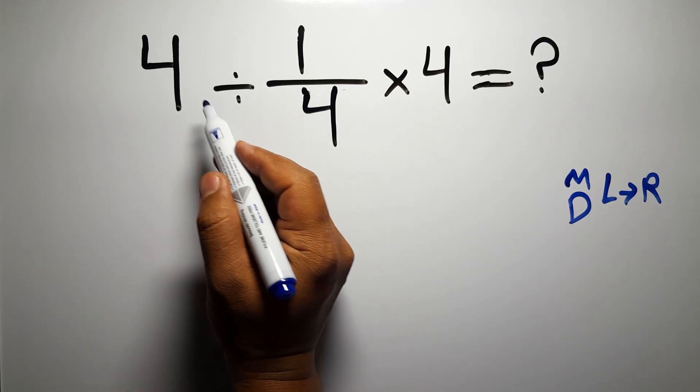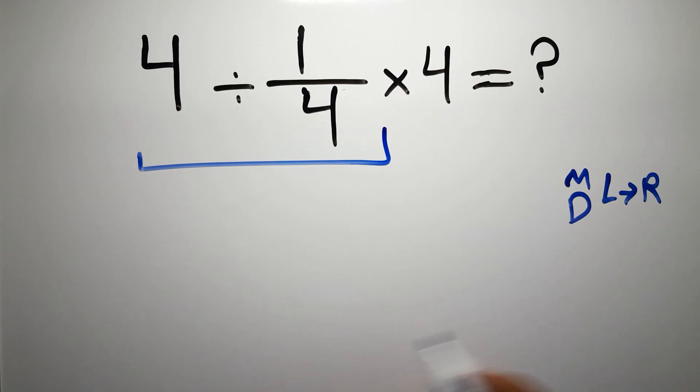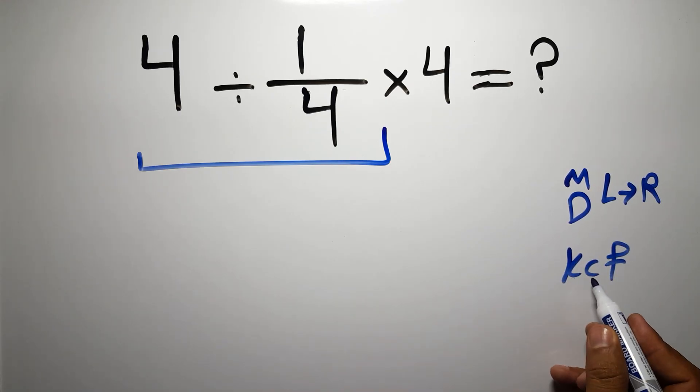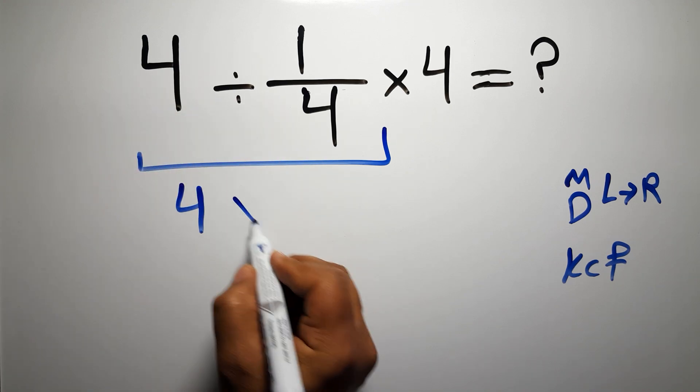So first, this division: 4 divided by 1/4. According to the KCF rule, K stands for keep, C stands for change, and F stands for flip. We can write: keep the first fraction, change division to multiplication, and flip the second fraction.